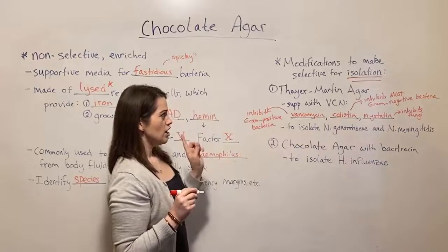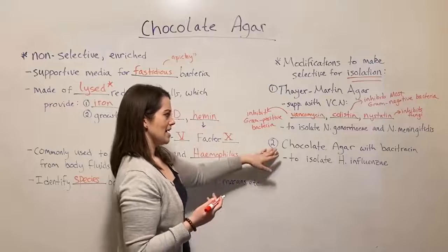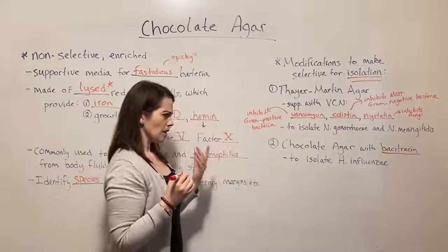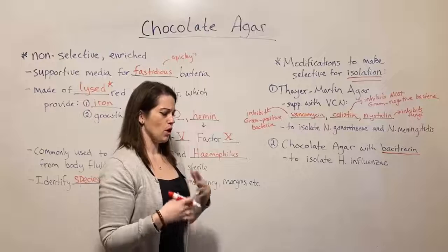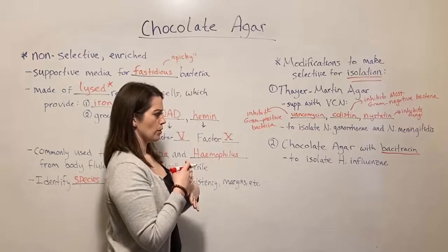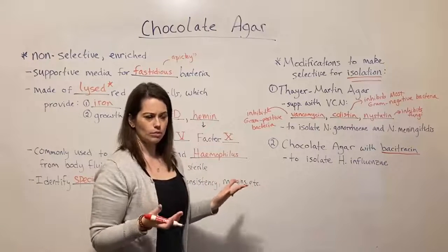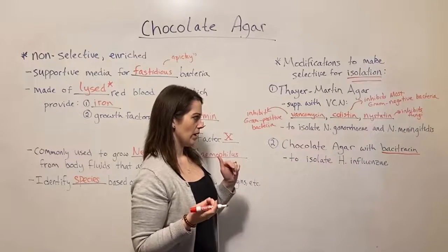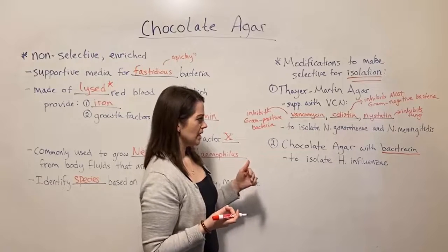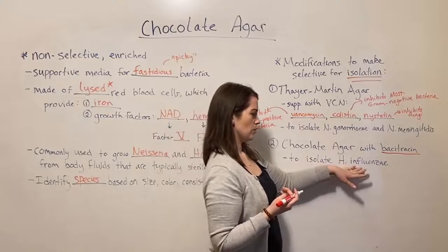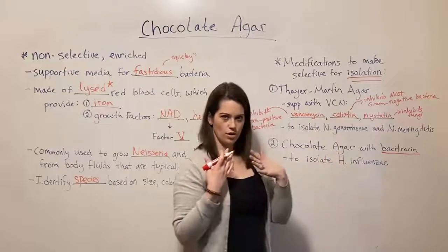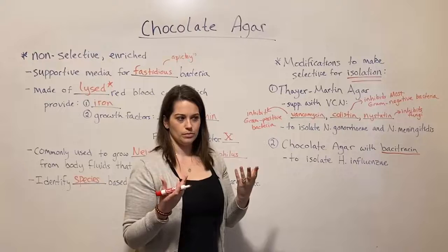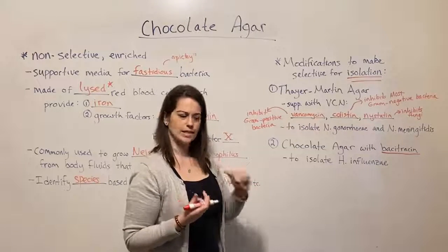Another modification to make chocolate agar selective for isolation is chocolate agar with bacitracin. Bacitracin is a broad-spectrum antibiotic meant to inhibit the growth of virtually all bacteria, and chocolate agar with bacitracin is used to isolate Haemophilus influenzae. I actually had some students win a science fair recently by using chocolate agar with bacitracin to look at groups of people who had H. influenzae in their nose, and how this could be used to examine that group's susceptibility or resistance to being infected with influenza — a pretty cool project.